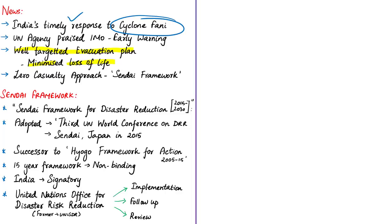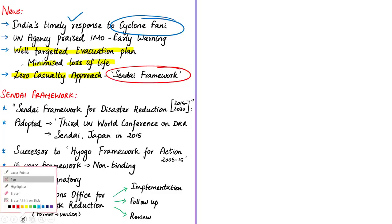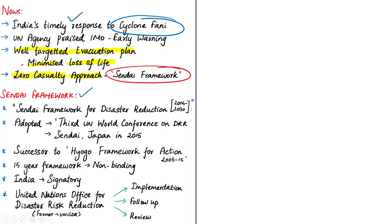The UN Office for Disaster Risk Reduction stated that India's zero-casualty approach for managing extreme weather events is a major contribution to the implementation of the Sendai Framework. The Sendai Framework is short for the Sendai Framework for Disaster Risk Reduction 2015–2030. It was adopted during the Third UN World Conference on Disaster Risk Reduction held at Sendai, Japan in March 2015, as the successor to the Hyogo Framework for Action 2005–2015.